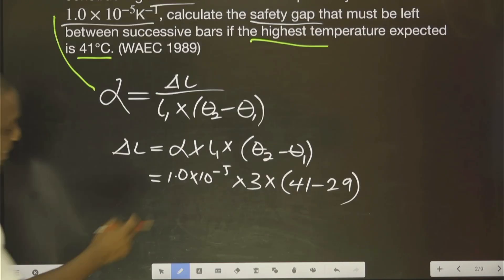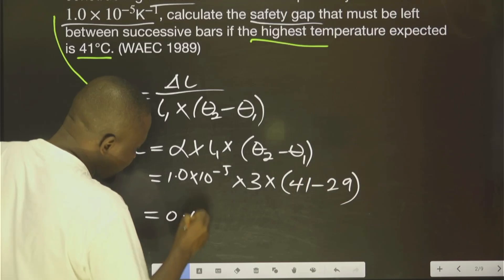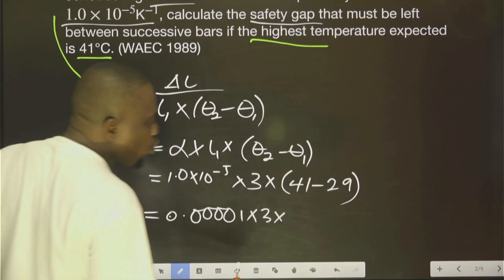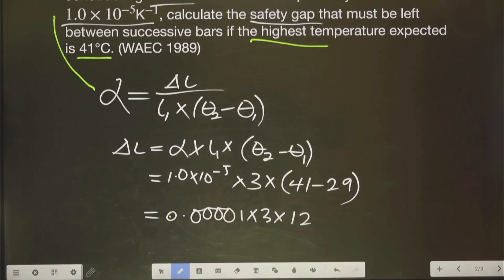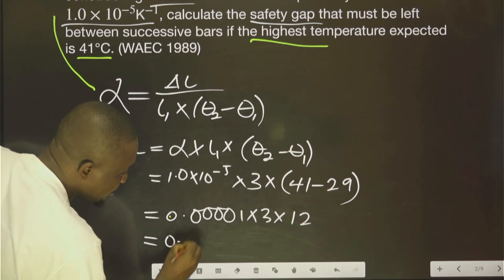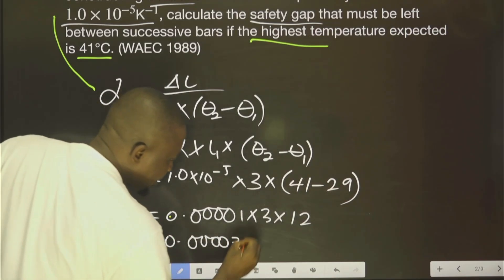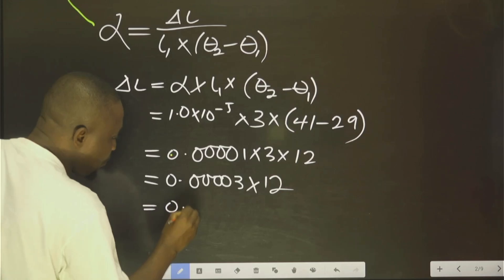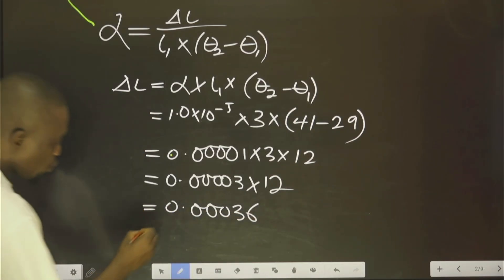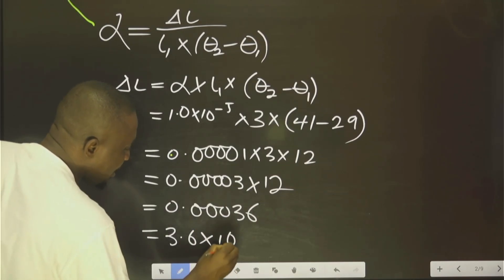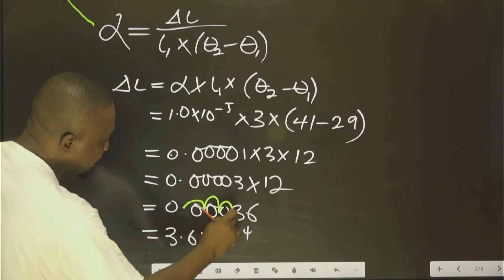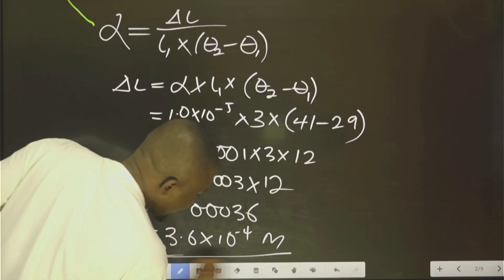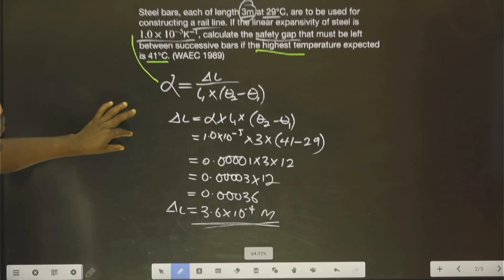All we have to do now is work this out. 1.0 × 10⁻⁵ is 0.00001, multiplied by 3, multiplied by 12. 41 minus 29 gives 12. Multiplying gives 0.0003 × 12, which gives 0.0036, that is 3.6 × 10⁻⁴. The original length was in metres, so this final answer must also be in metres: the safety gap is 3.6 × 10⁻⁴ metres.